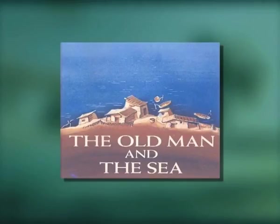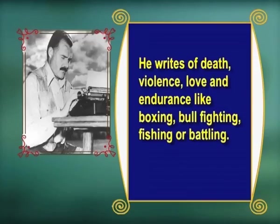It was the end of his career when Hemingway started working on novels about the sea, and the result was 'The Old Man and the Sea.' With his varied experiences in life — the war and battlefields, slums, police stations, and the jungles of Africa — his vision of life was one that focused on the dark side of existence. Life for him was an arena of struggle, and man had to endure and fight. His heroes are men of courage; Hemingway sees courage as grace under pressure. He writes of death, violence, love, and endurance like boxing, bullfighting, fishing, or battling.